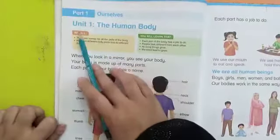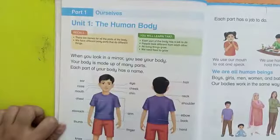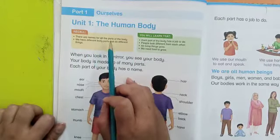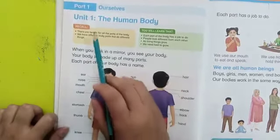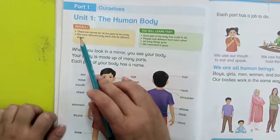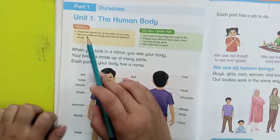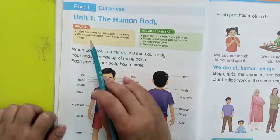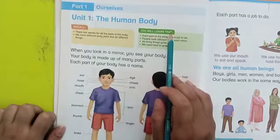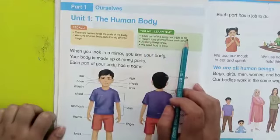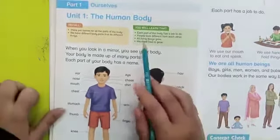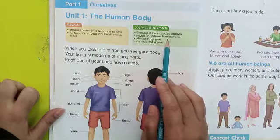Part 1: The Human Body. Our title is 'The Human Body.' Students, recall the names of all the body parts — you should remember them from previous classes. We have different body parts that do different things. Each part of the body has a job to do. People look different from each other.